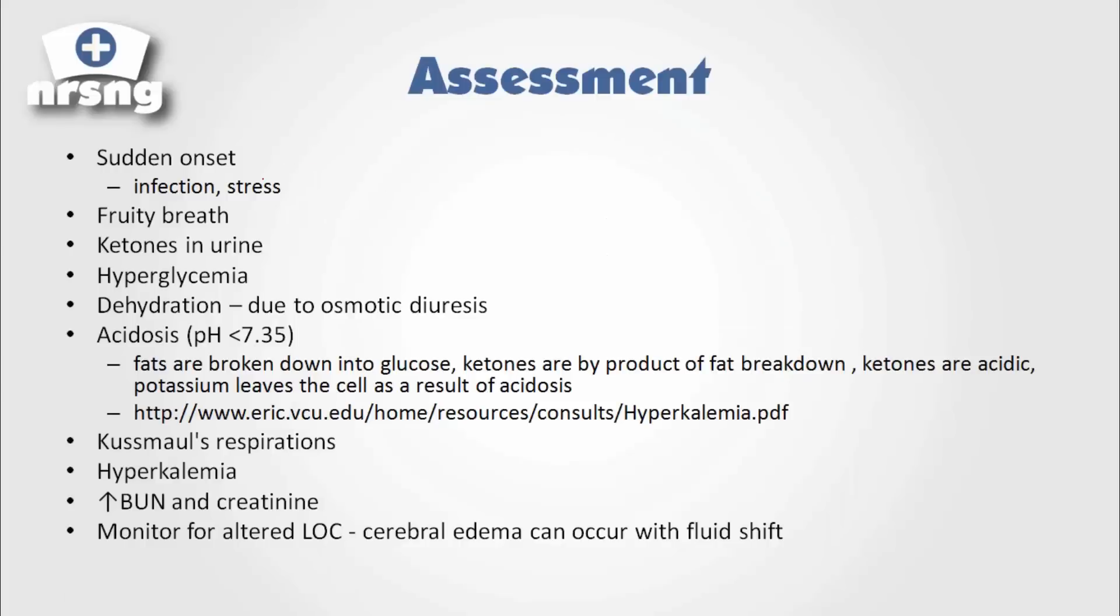Very quickly, the assessment. It's a sudden onset, usually associated with infection or stress. You're going to notice fruity breath on your patient and that is a result of those acid bodies which have a fruity smell. Ketones are going to be released into the urine. You're going to have severe hyperglycemia, generally in the 400 to 600 range with DKA. You're going to have dehydration and this is due to osmotic diuresis. You're also going to have acidosis. What is acidosis? Acidosis is a pH of less than 7.35 and an HCO3 of less than 22.